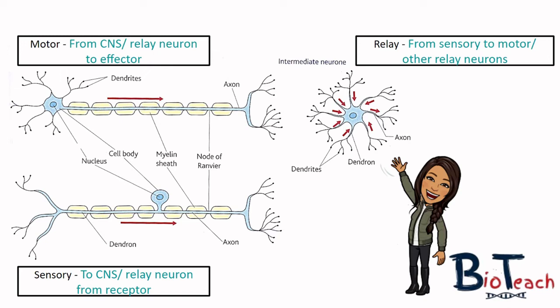The motor neuron is slightly different in that the cell body is at one end and the dendrites are at the opposite end, at the end of the axon. Nerve impulses travel from left to right in the diagram of the motor neuron, and similarly from left to right in the sensory neuron.